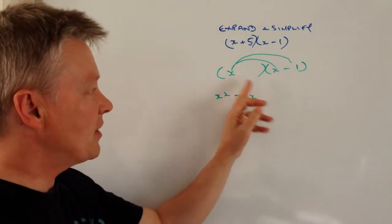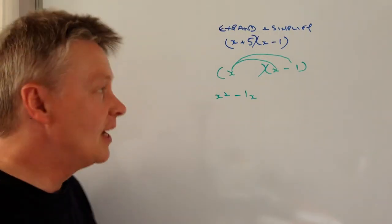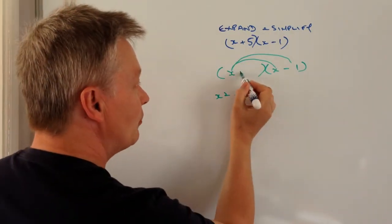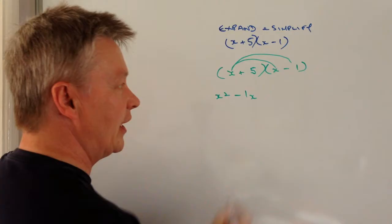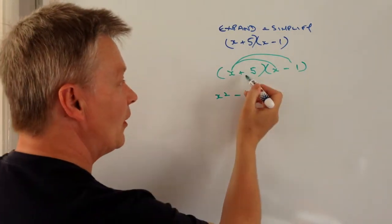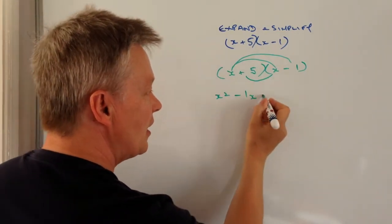In terms of the first bit of this type of problem, that's been taken care of by just multiplying through by X. So the next bit is to multiply through by the positive 5.